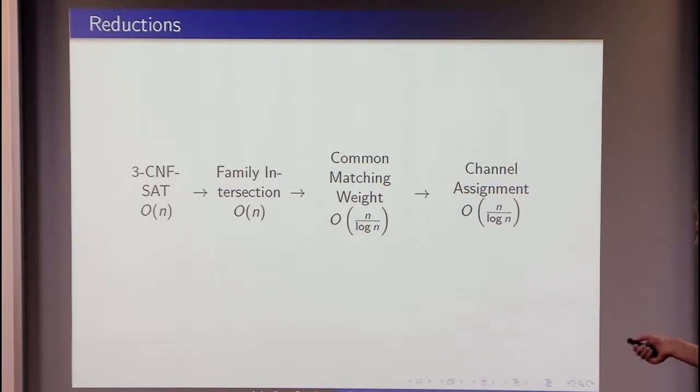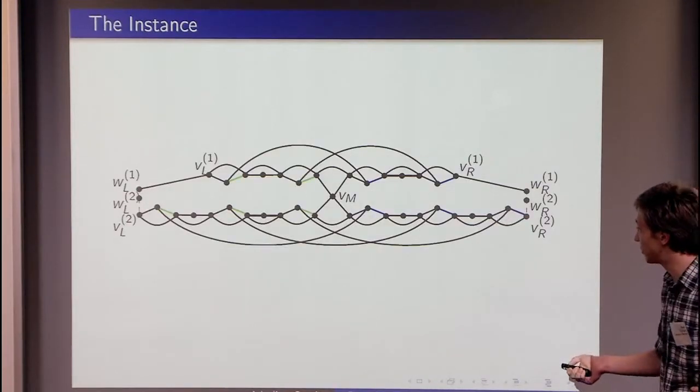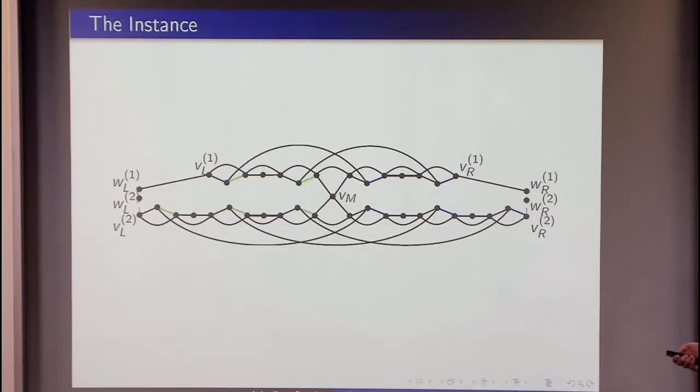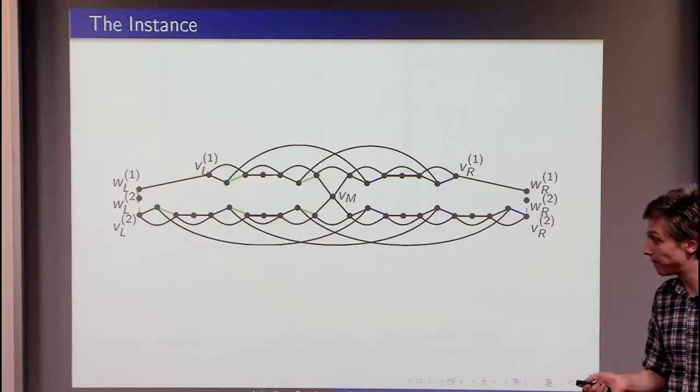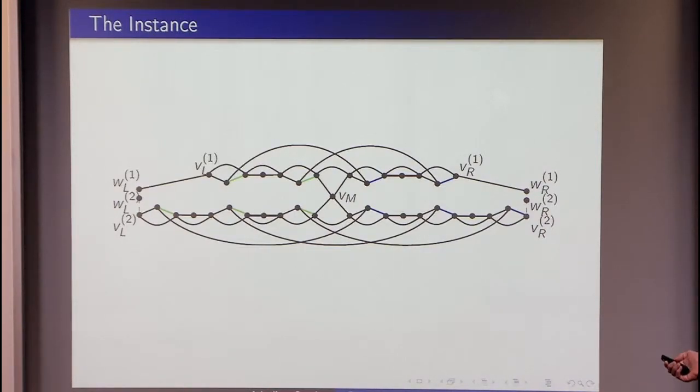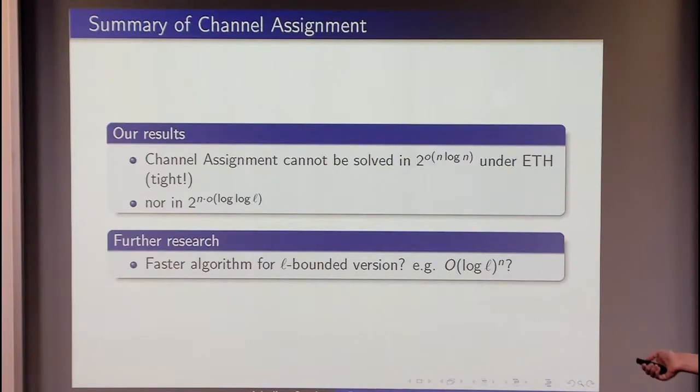All the rest is just gadgeting and we are ending up with this beautiful instance of channel assignment. And this instance has n divided by log n vertices asymptotically. We are obtaining a tight lower bound for the channel assignment problem and additional lower bound for the L-bounded version. But we do not know whether it is tight or not.